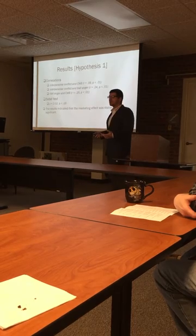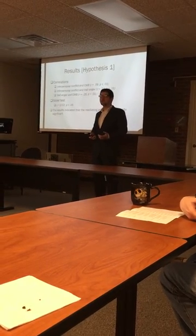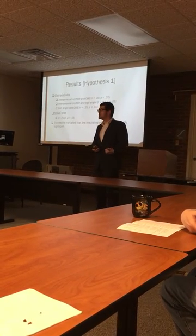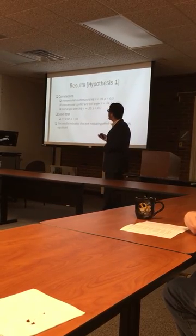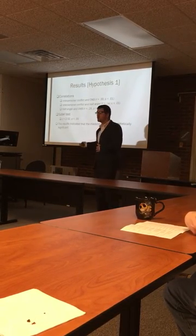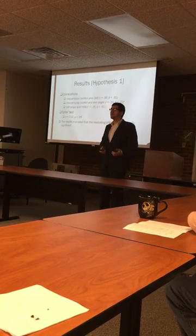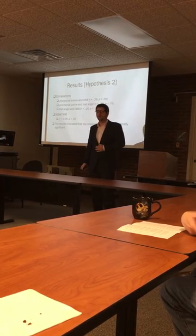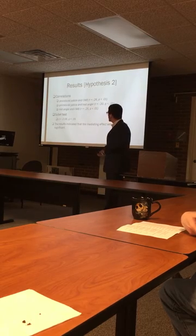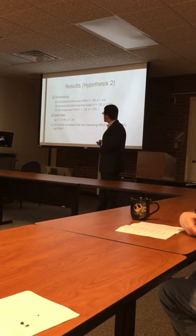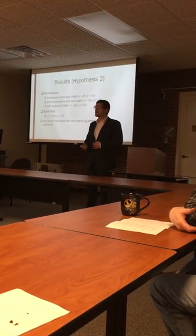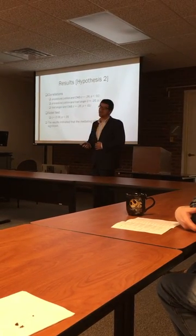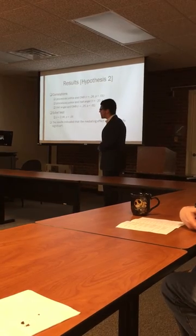I used a Sobel Z test to test the mediating effect. I started by running all the correlations, which proved significant, and then moved to the Sobel Z test which also came out with a significant result of 2.02, suggesting that trait anger does mediate the relationship between interpersonal conflict and counterproductive work behaviors. I did the same procedure for hypothesis two. All correlations proved significant, and the Sobel Z test produced a Z score of negative 2.06, which was also significant, suggesting that trait anger does mediate the relationship between procedural justice and counterproductive work behaviors.